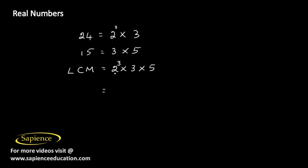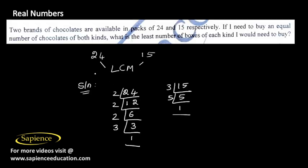So LCM is 2 cube, which will be 8 into 3 is 15, and 15 times 8 is 120. So the number of chocolates required will be 120 of each. We need 120 chocolates of the first kind and 120 chocolates of the second kind. But we need to find the number in boxes.